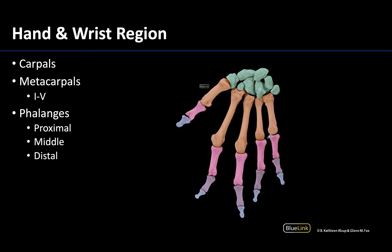Now we have finally reached the wrist and hand, so we will start proximally and move distally. Shaded in green here are the carpal bones, often referred to as wrist bones, of which there are eight, arranged in two separate rows: a proximal row and a distal row of carpal bones.